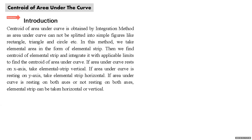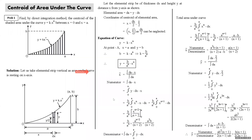To find the centroid of the total area under the curve, you need to decide the orientation of the elemental strip. If the area under the curve is resting on the x-axis, take the elemental strip vertical. If resting on the y-axis, take it horizontal. If resting on both axes or neither, horizontal or vertical will not make much difference. We will cover three problems of centroid of area under a curve.